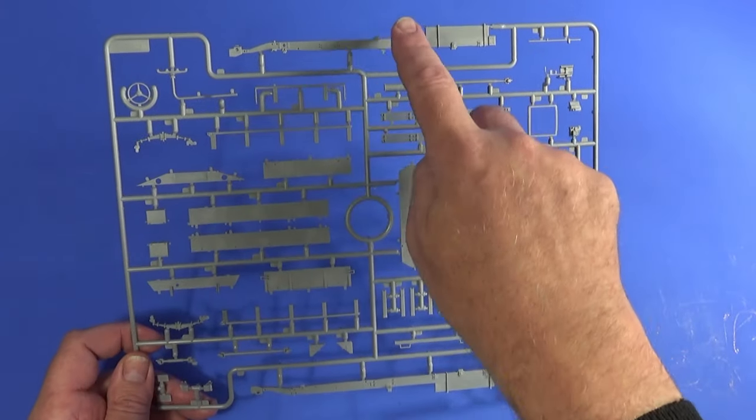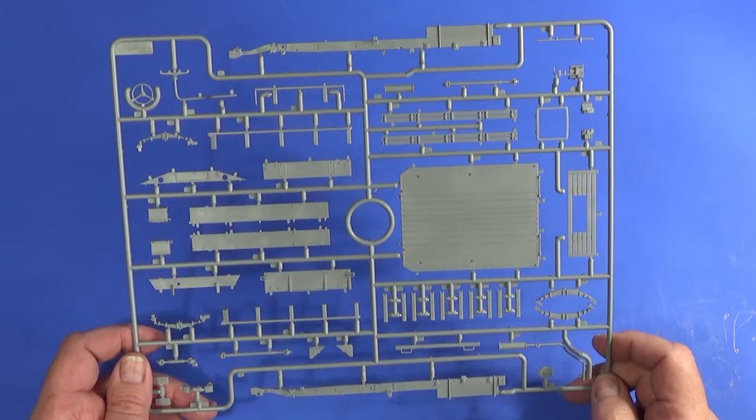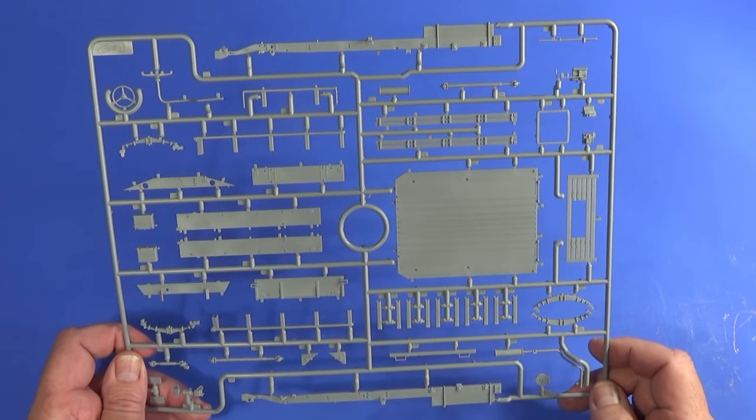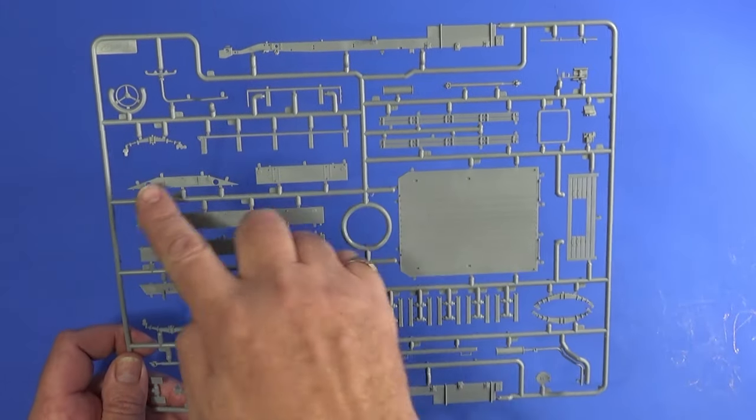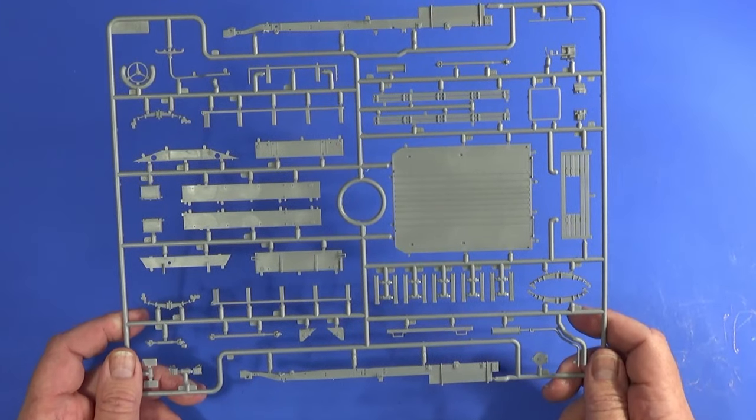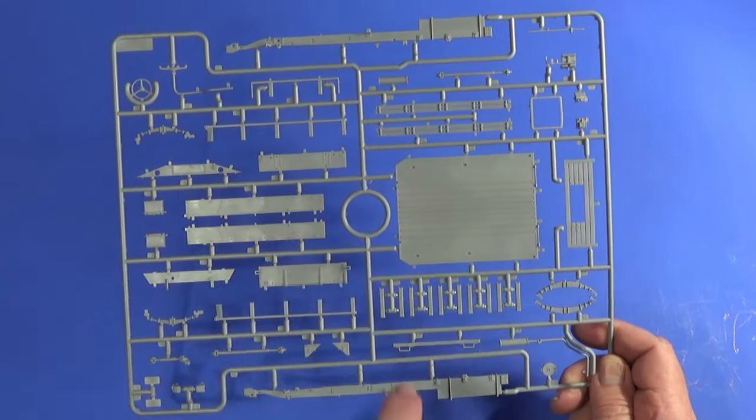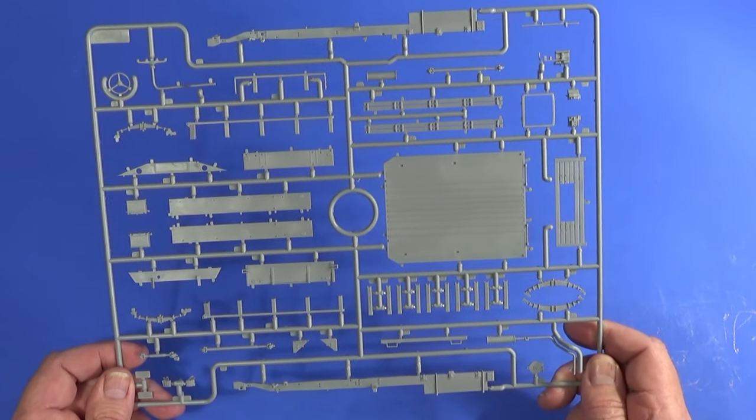Frame B is the chassis and the rear bed of a G7107 truck. The majority of these bed parts you're not going to use because the rear of the vehicle is a custom bed, but certainly parts of the suspension, steering wheel, and chassis rails you will be using.